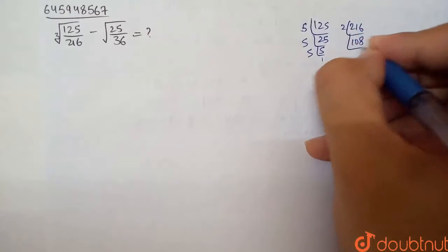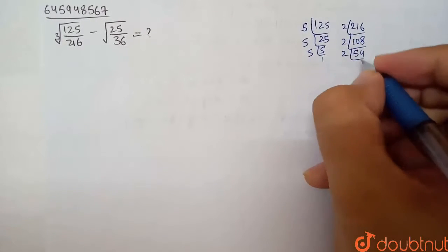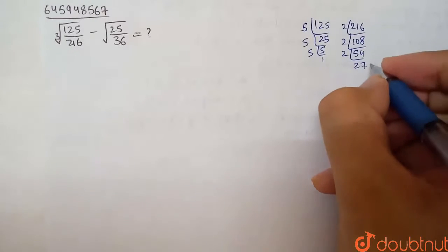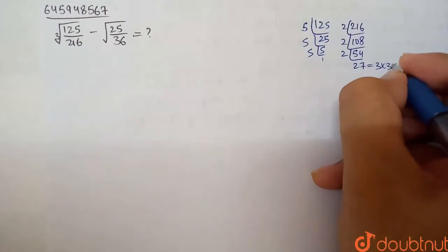216 divided by 2 gives 108, then 2 gives 54, and 2 gives 27. And 27 is basically 3 into 3 into 3.